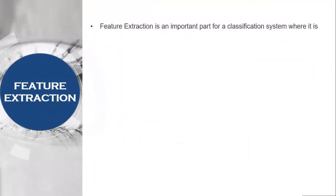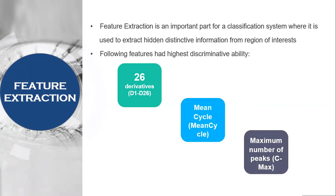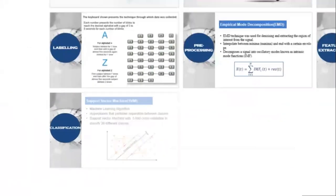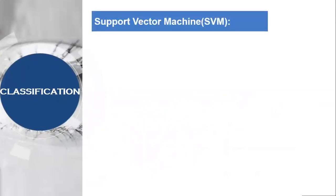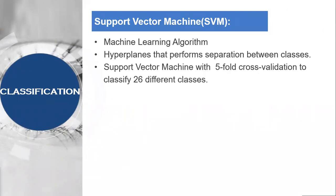Feature extraction is an important part of our classification system where it is used to extract hidden distinctive information from the region of interest. Features with highest discriminative ability were gained: quantitative derivatives, mean cycle, and maximum number of peaks. Then classification: support vector machine was used for classification, a machine learning algorithm that uses hyperplanes to perform separation between classes. Support vector machine with five-fold cross validation was utilized to classify 26 different classes representing alphabets from A to Z.